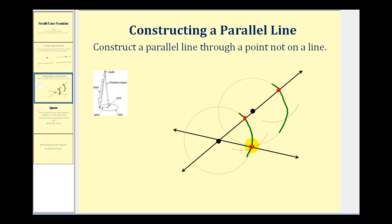Once we have this length marked with our protractor, we're going to swing another arc that intersects the given line — something like this. Then take the point of the protractor and put it on the other point of intersection with this green arc, and swing an arc that intersects the green arc — something like this.